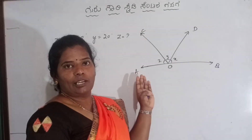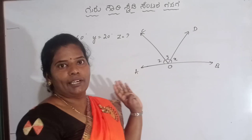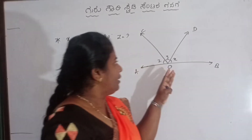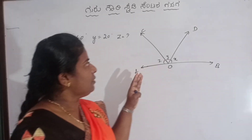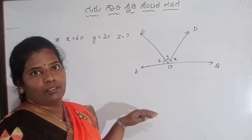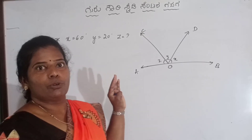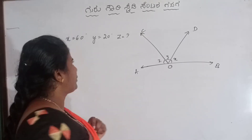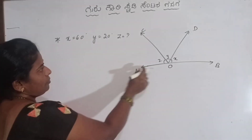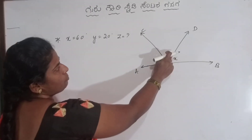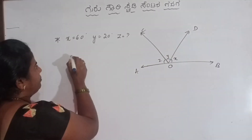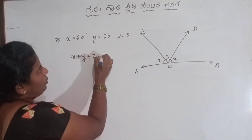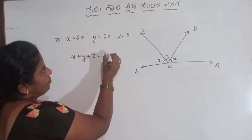The sum of the adjoining angles is equal to 180 degree. Or, the angles made by one side of a straight line — the sum is equal to 180 degree. How? X plus Y plus Z equal to 180 degree.